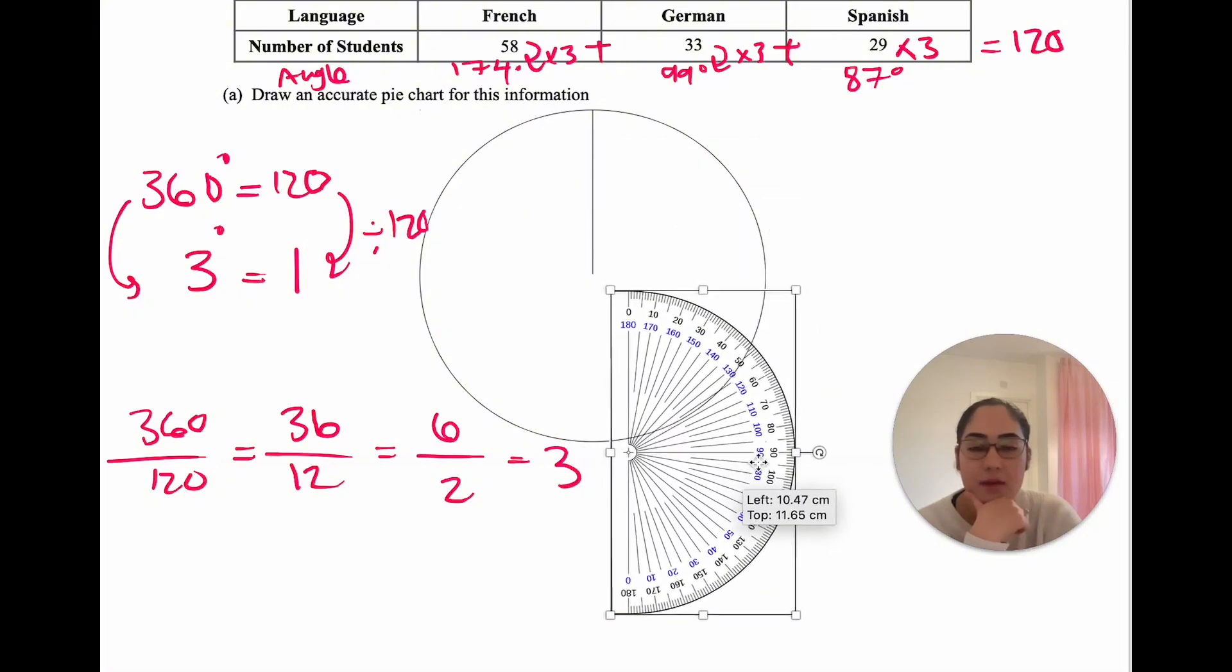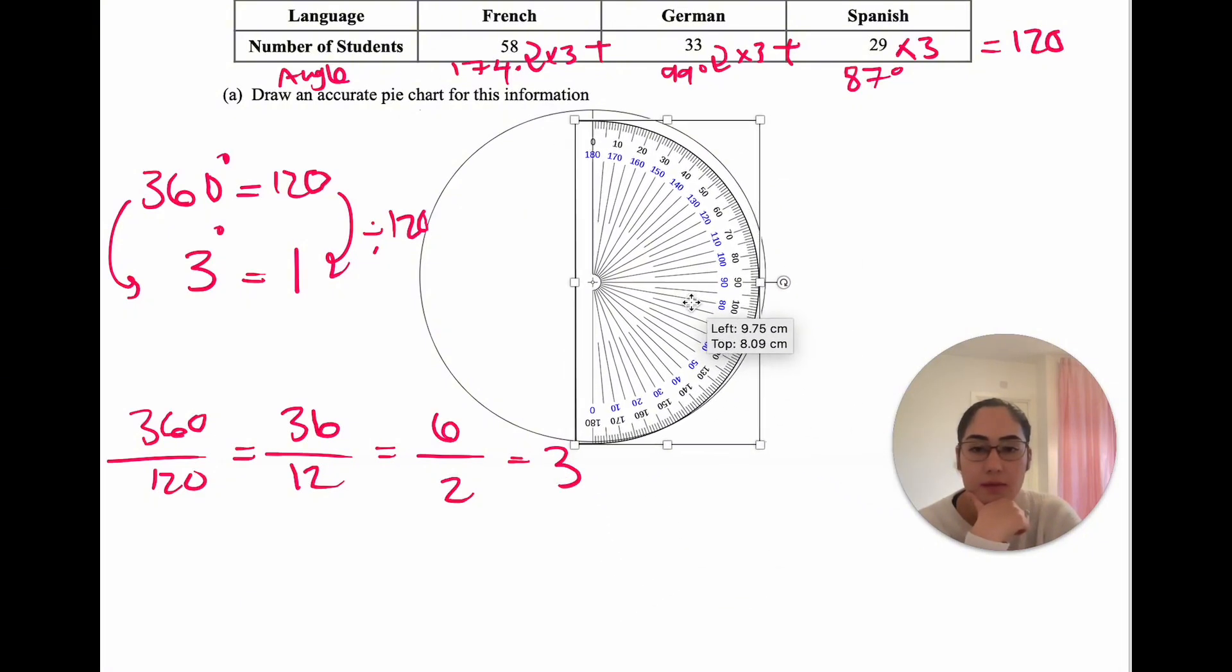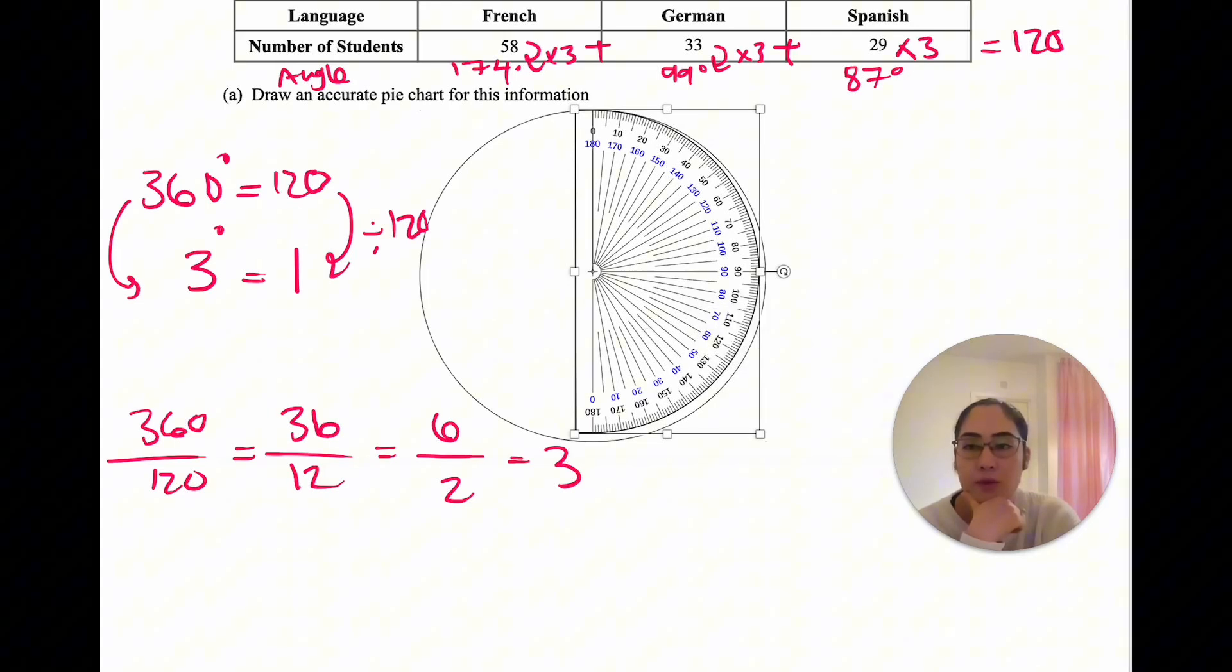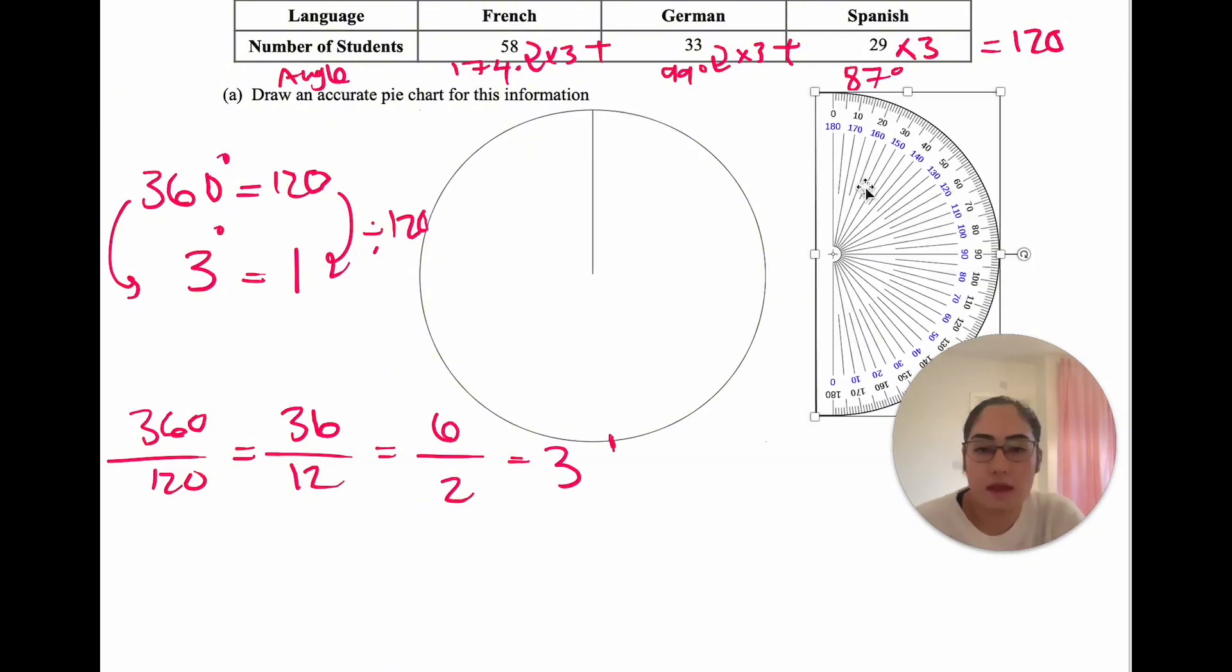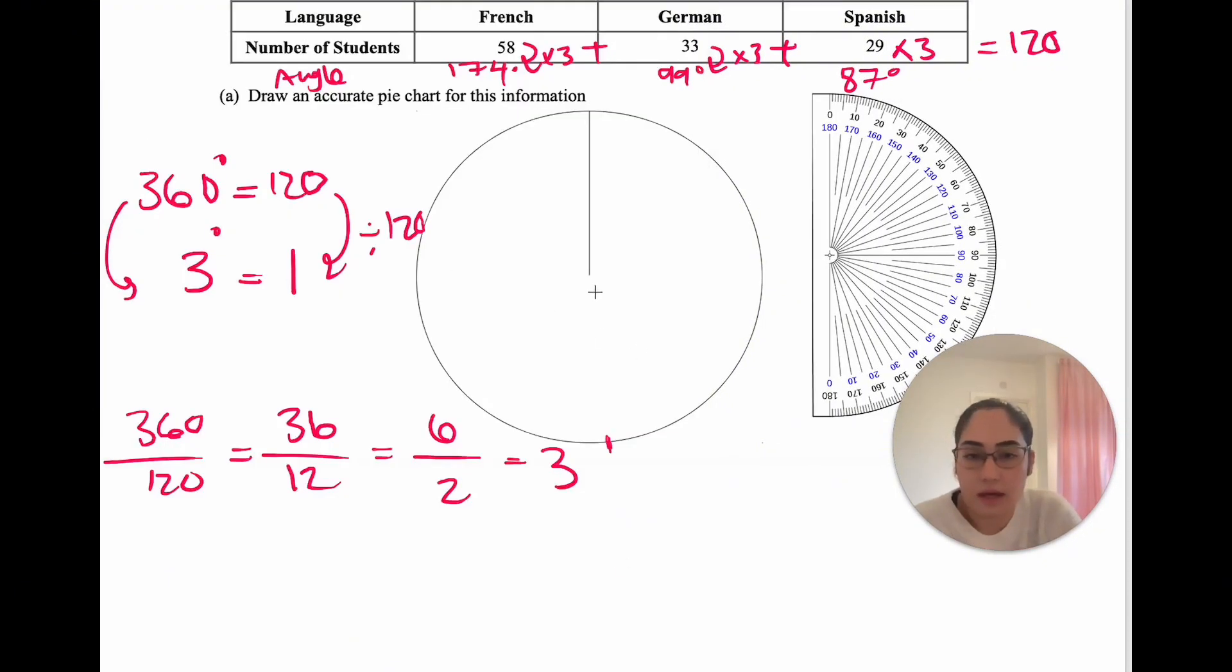Align the 0 with the line that's already drawn. We place the 0 on it, and then we measure. The first category, French, is 174 degrees. So we go from 0 to 174, being as accurate as we can be. 170 is here, 174 would be right there. Then grab a ruler and draw a line from the centre to the line we just measured. This is our first category, French, which was 174 degrees.